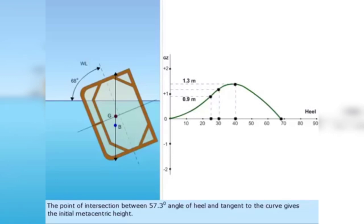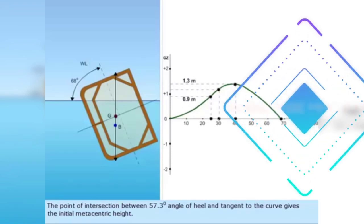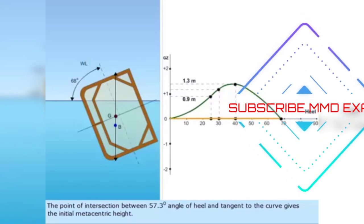The point of intersection between 57.3 degrees angle of heel and tangent to the curve gives the initial metacentric height.